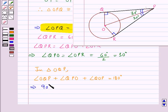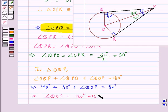QOP is equal to 180 degrees by the angle sum property of triangle. So this means 90 degrees plus 30 degrees plus angle QOP is equal to 180 degrees. This means angle QOP is equal to 180 degrees minus 120 degrees equal to 60 degrees.